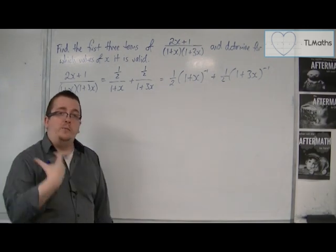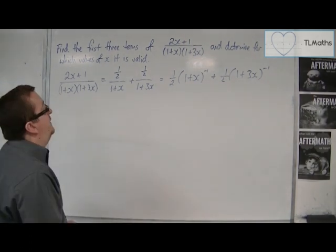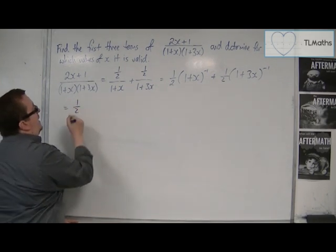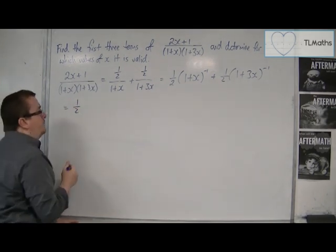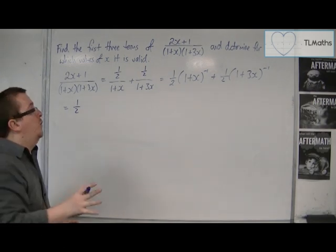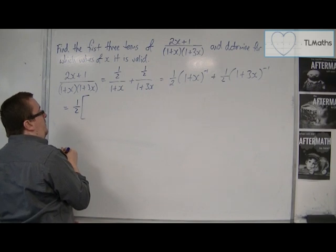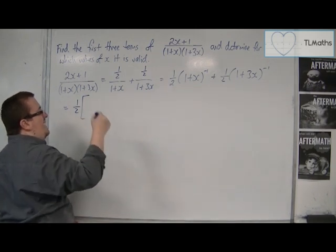And now I must use the binomial expansion to expand these out to the first three terms. So we'll keep that half out the front. And if we keep the half out of the front of the whole thing, that's probably going to be easier. So we've got 1 plus x to the minus 1. So 1 plus nx.